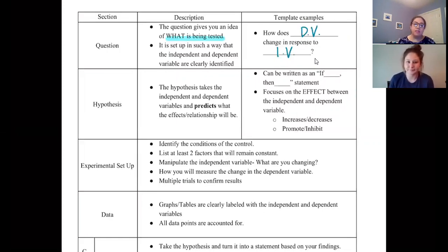We have a question set up like this to make writing your hypothesis, which is the next section, very easy. Your hypothesis takes your independent and dependent variable and tries to predict what the relationship between these two concepts is going to be. Now you can write it as an if-then statement just like you've done in previous years. We really would prefer you didn't but you're still going to get points for writing your hypothesis in that format.